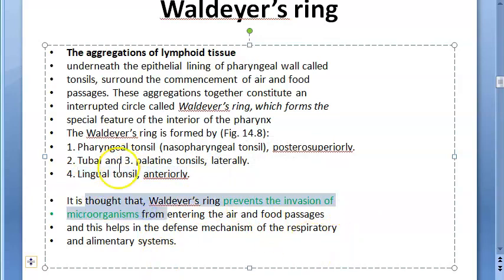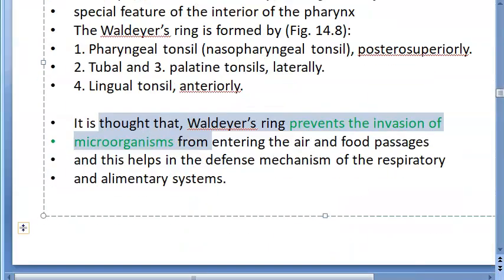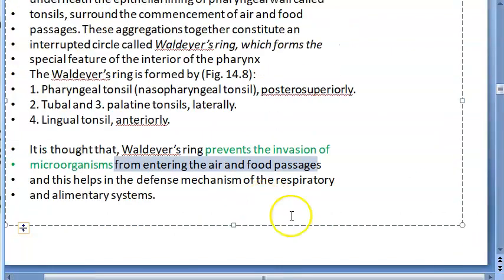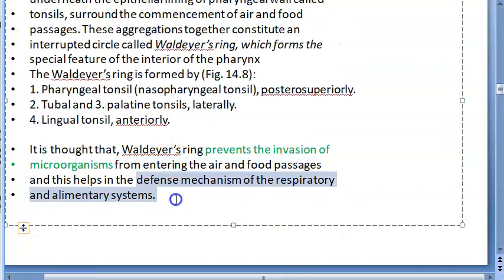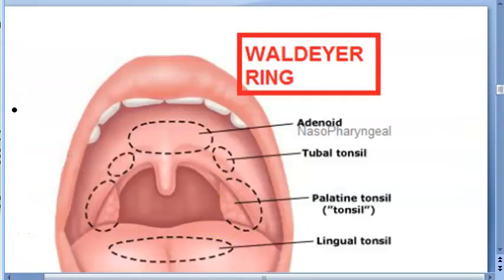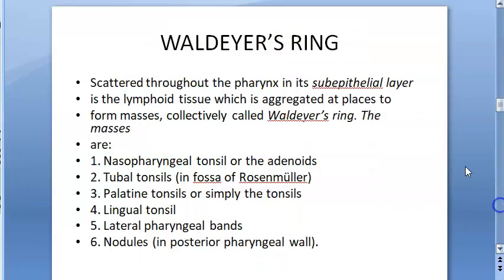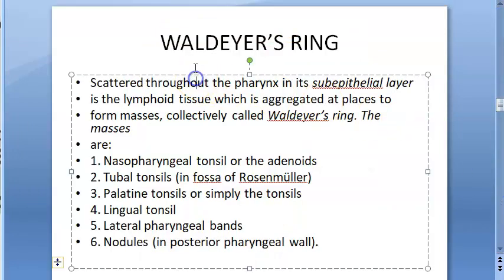The function of Waldeyer's ring is to prevent the invasion of microorganisms from entering the air and food passages. So it is a defense mechanism of both the respiratory and alimentary systems, protecting against food- and air-borne pathogens.